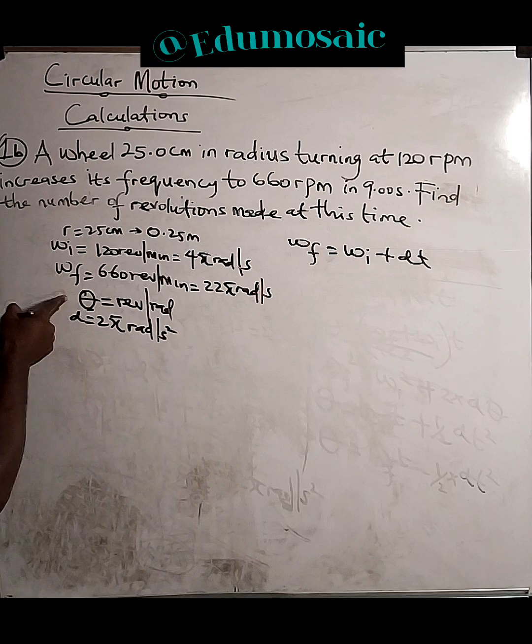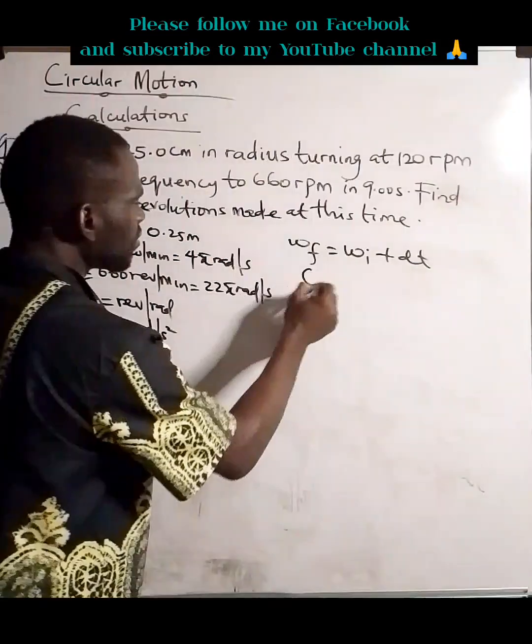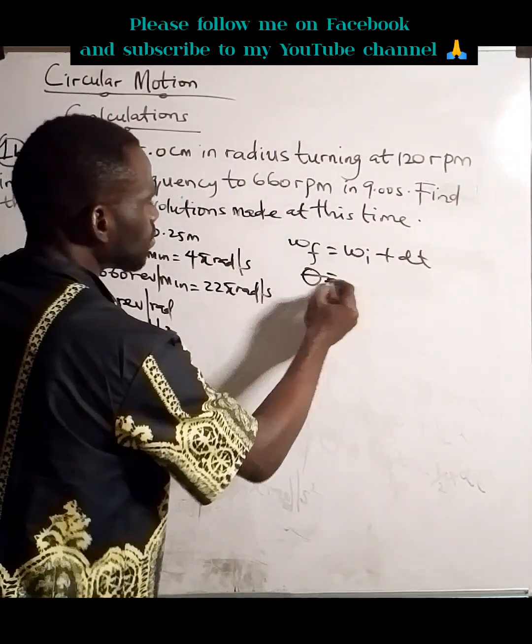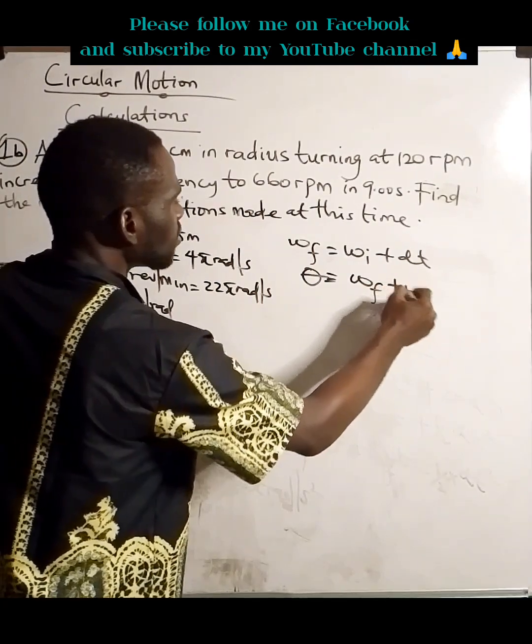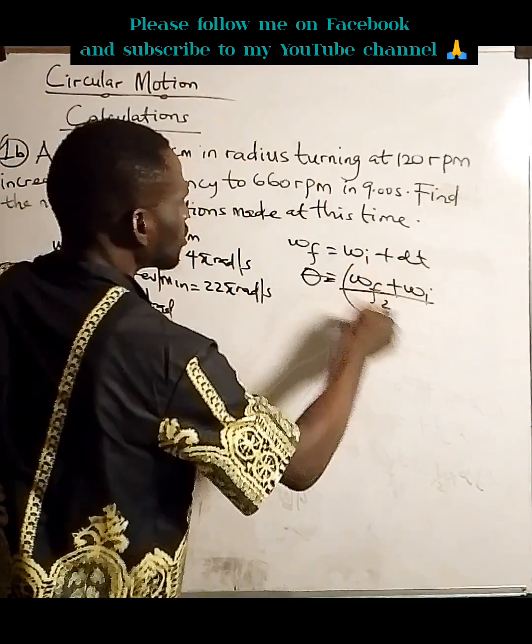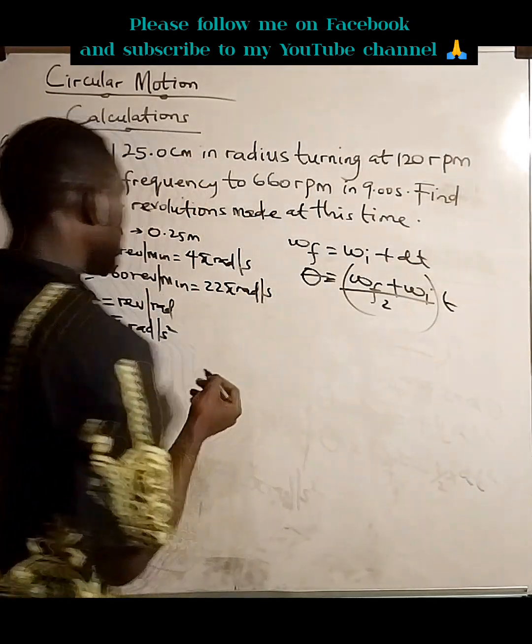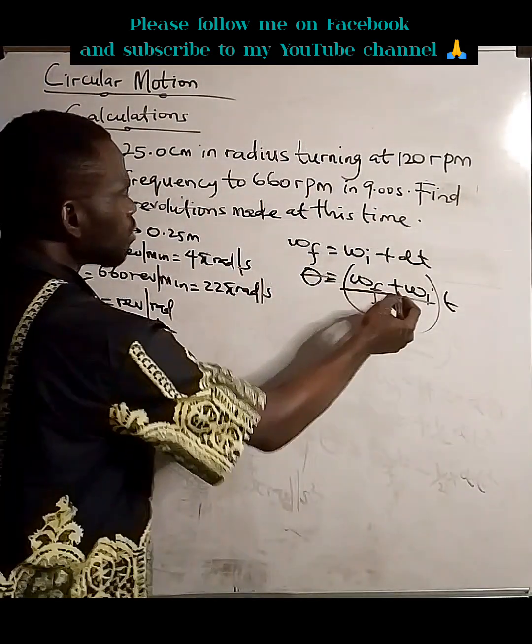So, now, how do we get this? We're going to use the average angular velocity times time, more or less like saying S equals V plus U over 2 times time.